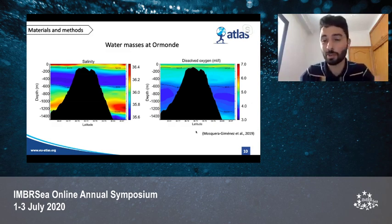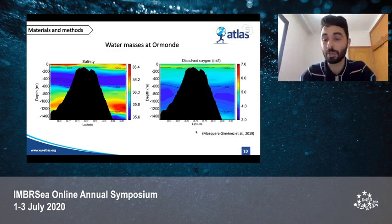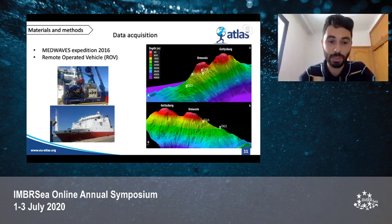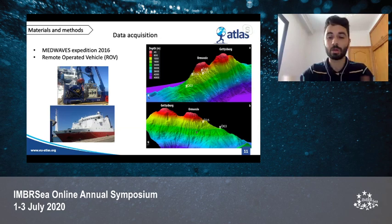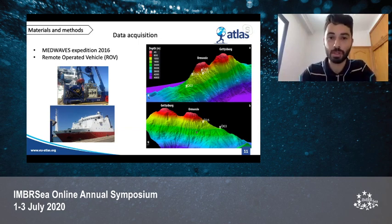Looking at the salinity and dissolved oxygen profile, it is easy to differentiate among water masses because the salinity is really high with values above 36, and the dissolved oxygen is poor with values below 4 milliliters per liter. The data was acquired during the MedWaves expedition in 2016 on board the research vessel Sarmiento de Gamboa, using the remotely operated vehicle Liropus 2000, equipped with photo and video cameras, an underwater positioning system, arms to take physical samples, and a pair of lasers 10 centimeters apart used as a scale.